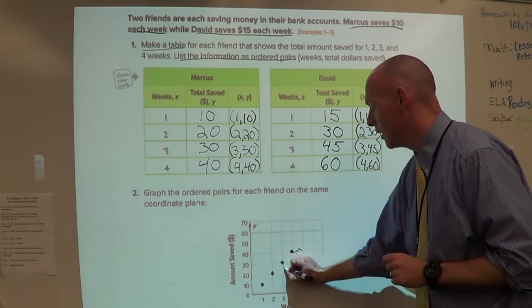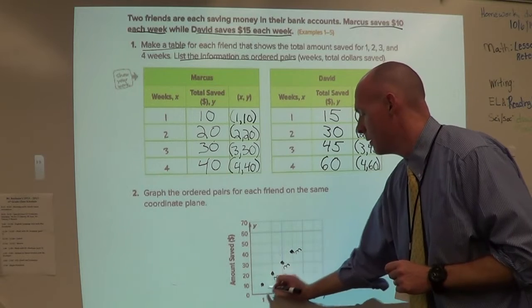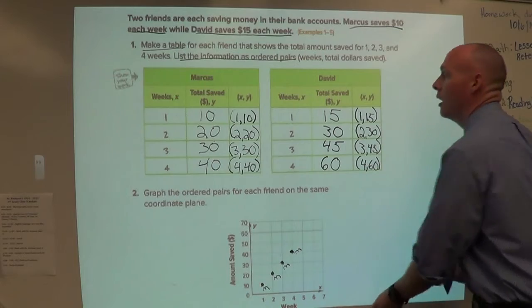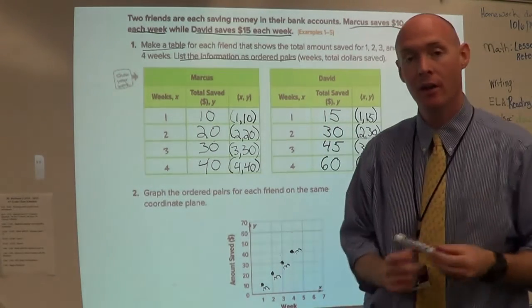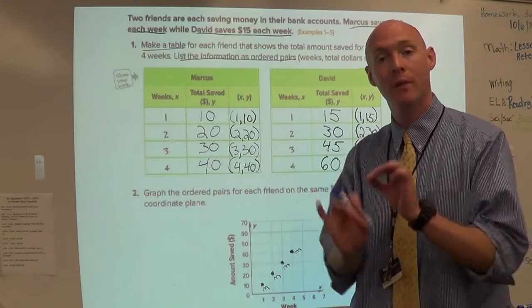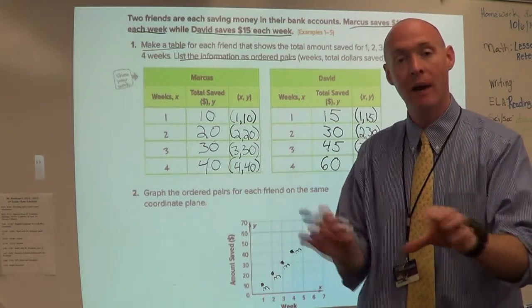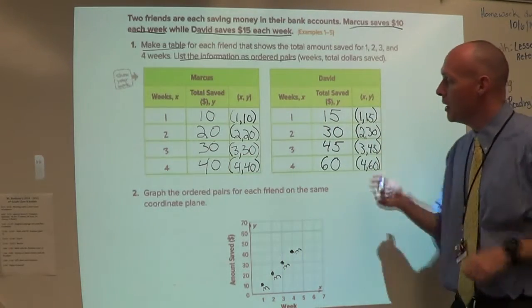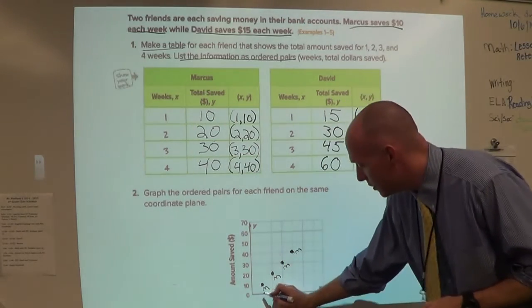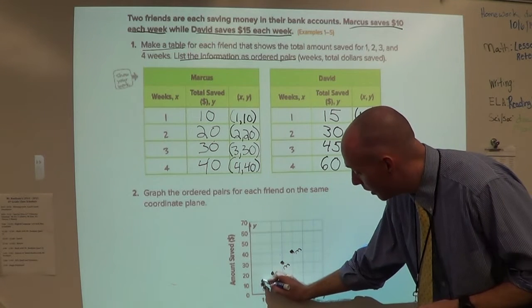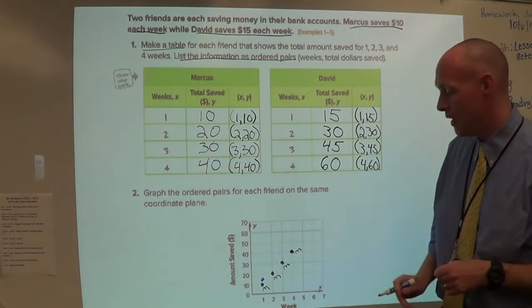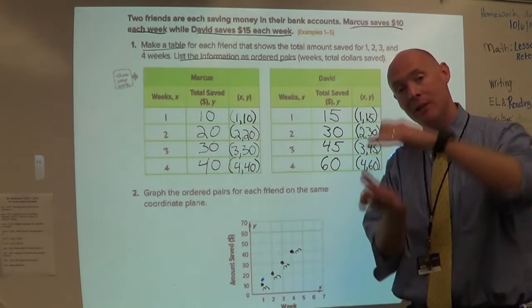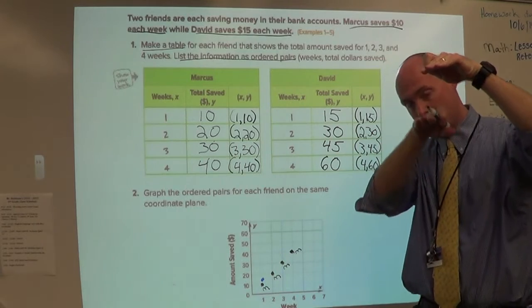So that is my Marcus line. I'm just going to label them with little Ms, just so I know that that was Marcus. For David, I'm just going to switch color. If you happen to have another pen or if you have a different colored pencil around, switch colors. If not, you can just label it with a D. But I'm going to go to David. David, (1,15). So I'm going to go to one, and I'm going to go above the 10, below the 20 to 15. Notice there's not a 15 number, so it's halfway between 10 and 20. So make sure your point is right there.